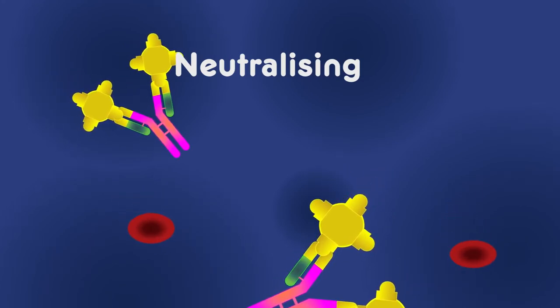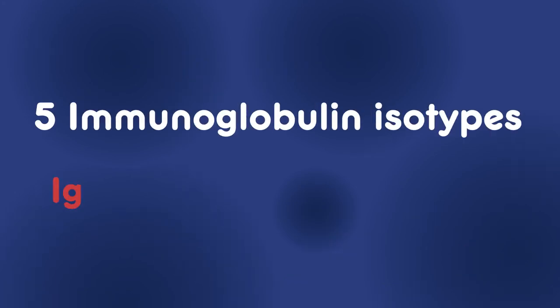In mammals, there are five immunoglobulin isotypes. They perform different roles and help direct the appropriate immune response for each different type of foreign invader.